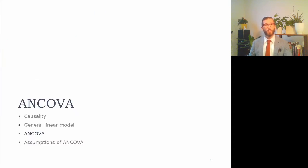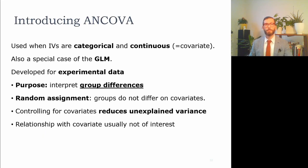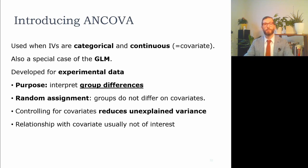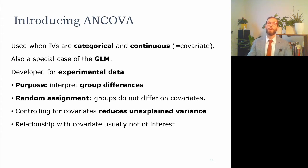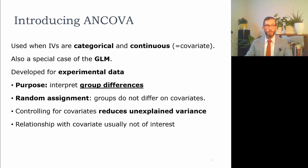Another example of the general linear model is ANCOVA, typically used when predictors include both categorical and continuous variables. ANCOVA was initially developed for experimental data to interpret differences between groups. When using random assignment, groups should not differ systematically on covariates, though by chance some differences may occur. Controlling for covariates reduces unexplained variance in the outcome, giving more statistical power when examining the effect of the categorical predictor of interest.